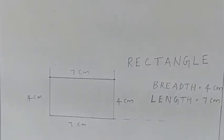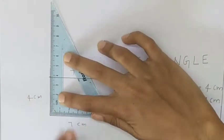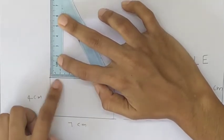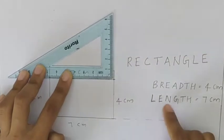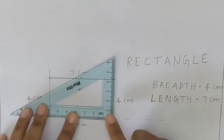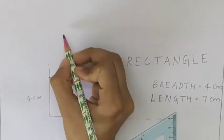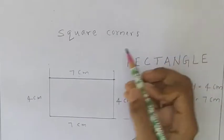What about the corners in this rectangle? These are four corners of the rectangle. The corners in a rectangle are square corners. When we put this set square here, you can see we get a square corner. Putting the set square at each corner, you get a square corner every time. So all the corners of a rectangle are square corners — S-Q-U-A-R-E C-O-R-N-E-R-S. You can see this in the textbook.